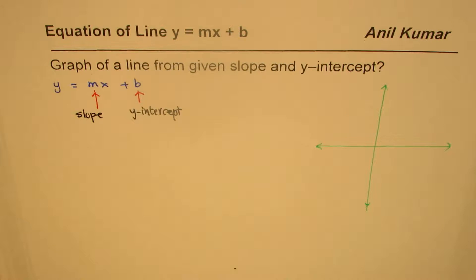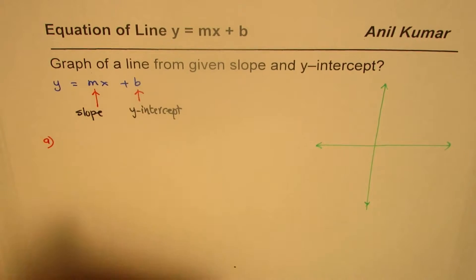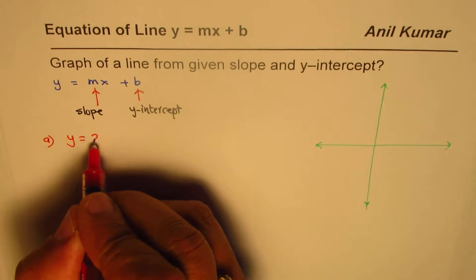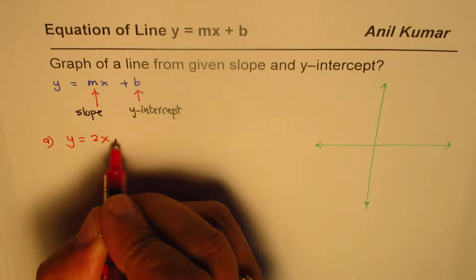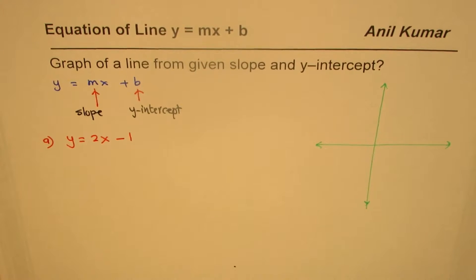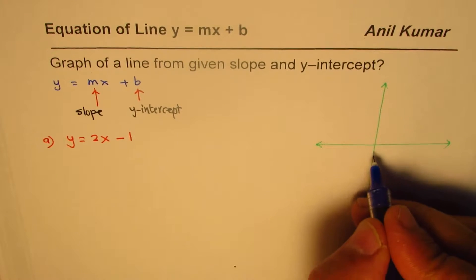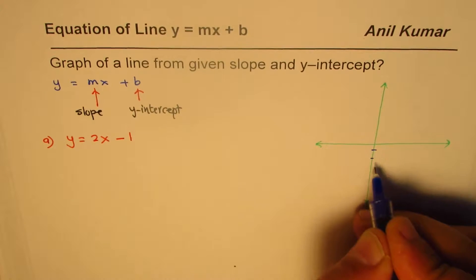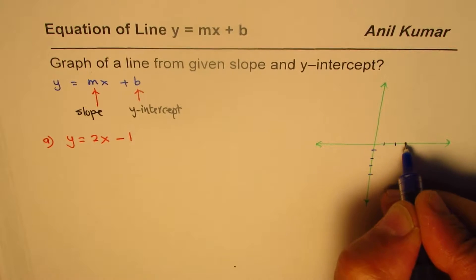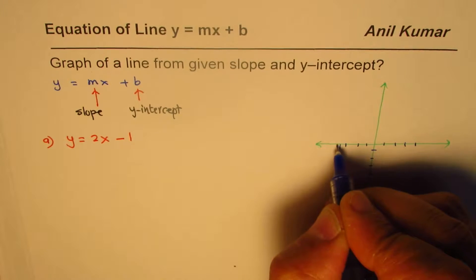Let's take Example A: y = 2x - 1. Let me create a coordinate grid — 1, 2, 3, 4 on each axis.